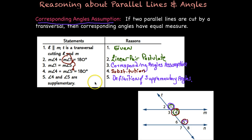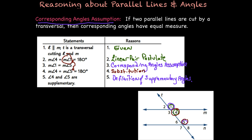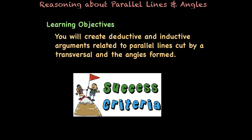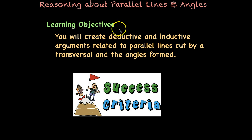Now you've seen how to use logic to prove that things are equal or supplementary given certain assumptions and postulates. Make sure you're keeping a toolbox in your notes of all the different assumptions and postulates we go through each time. That concludes our lesson on reasoning about parallel lines and angles — you have created deductive and inductive arguments related to parallel lines cut by transversals. Now you're going to move on and try this in your own practice.